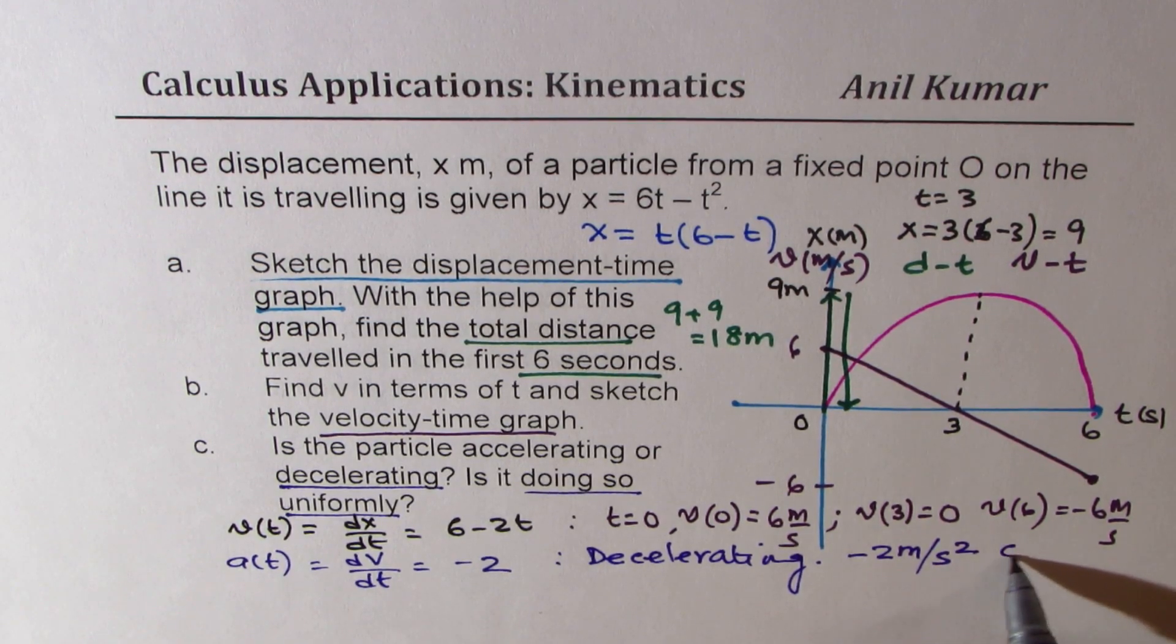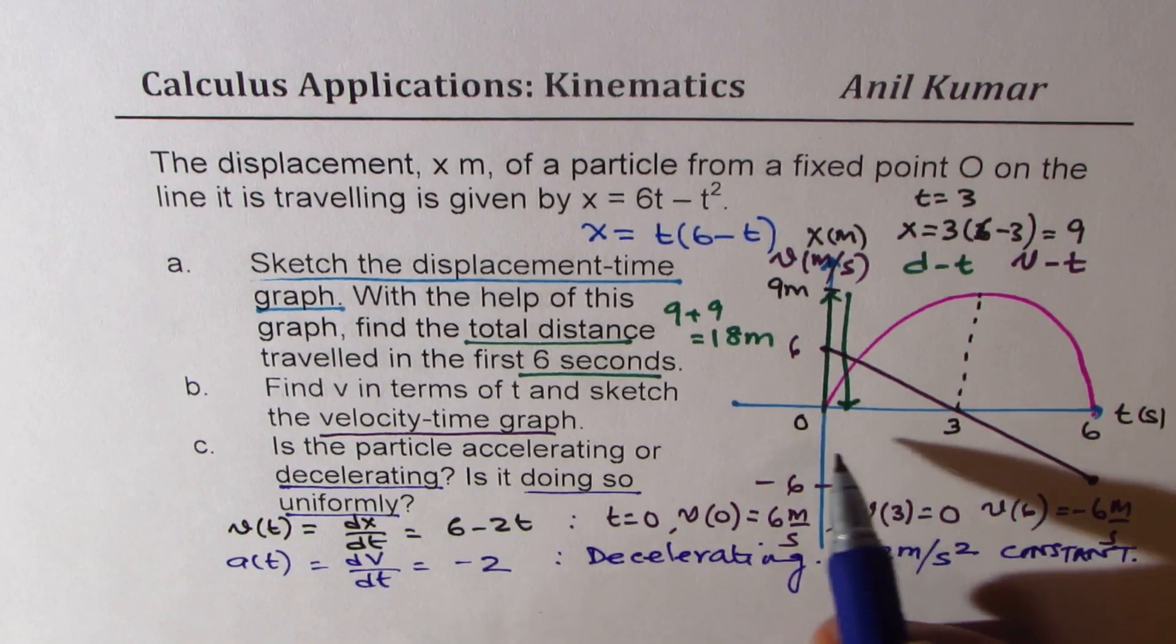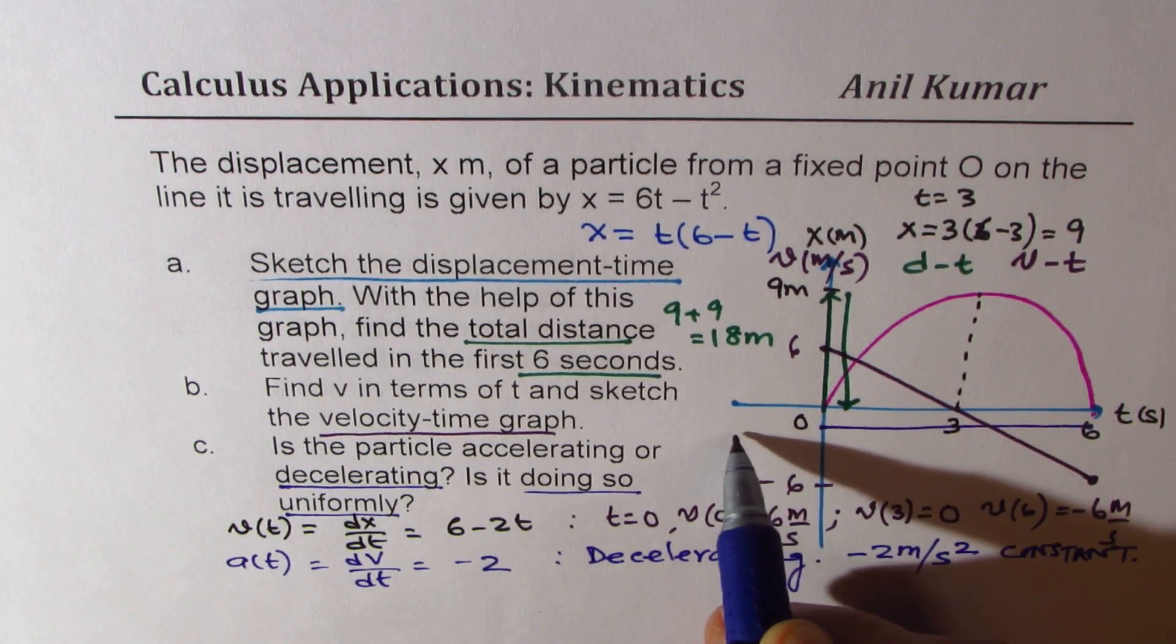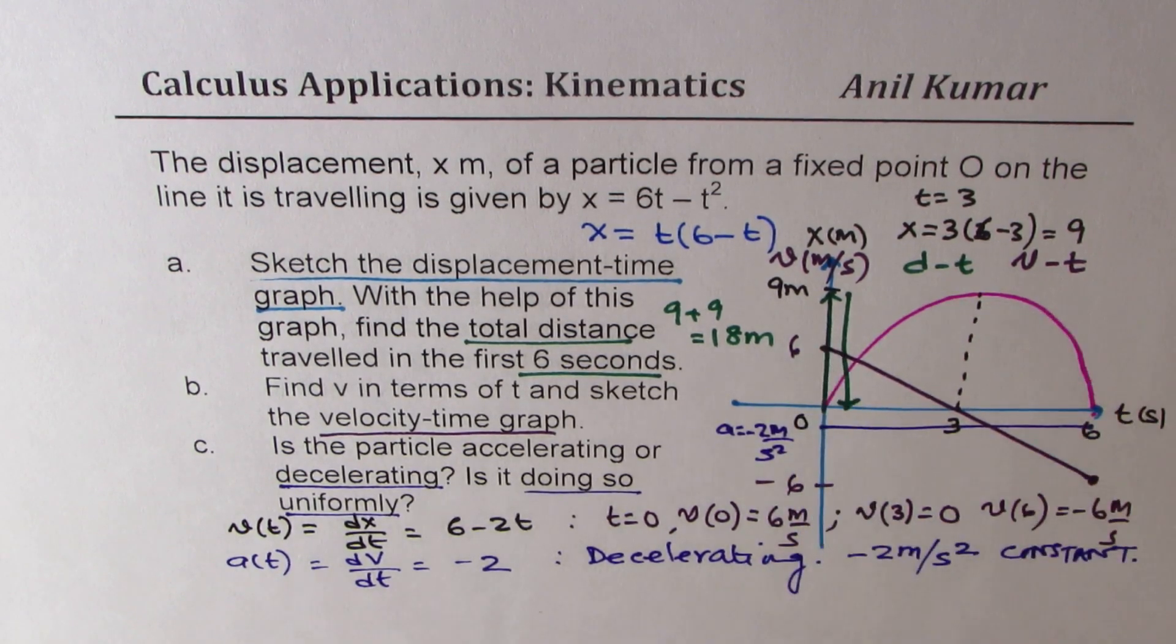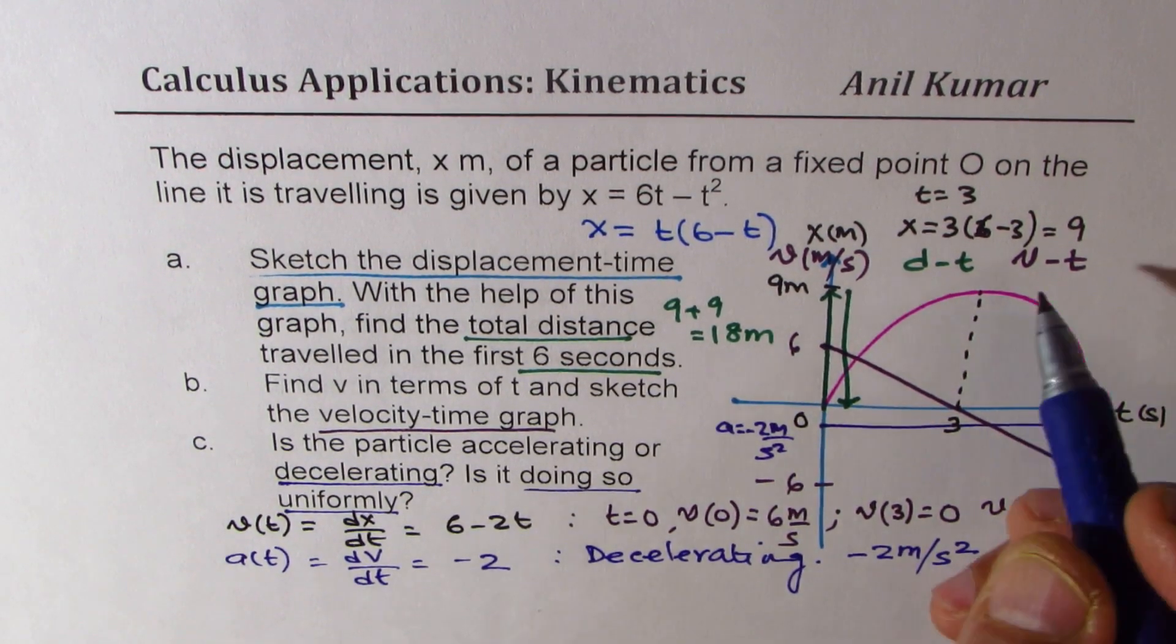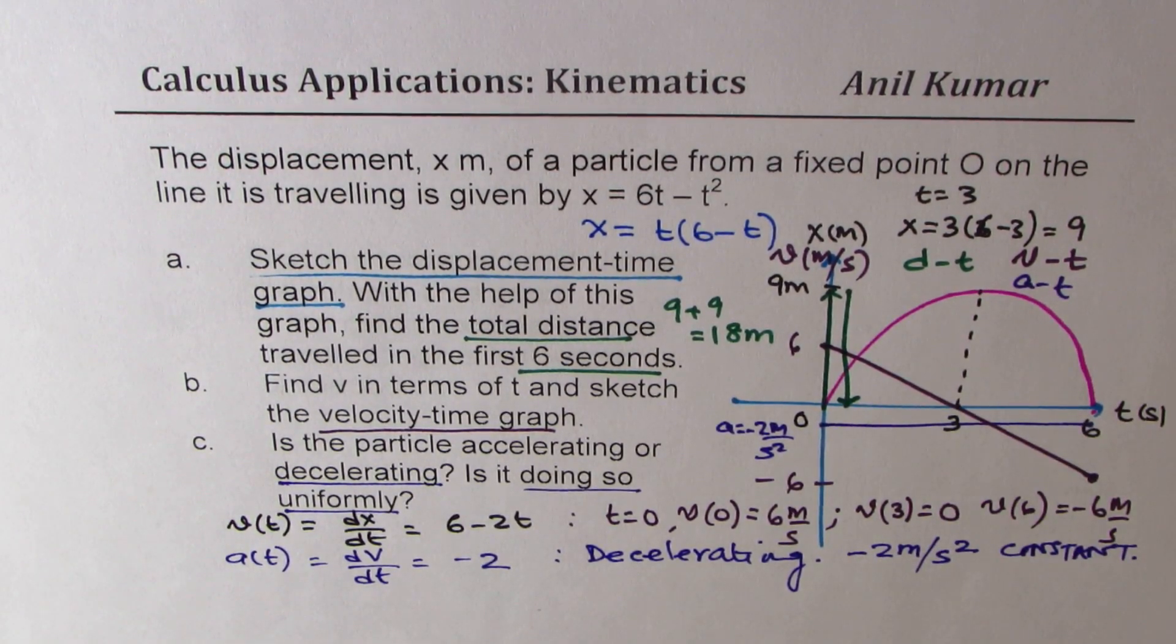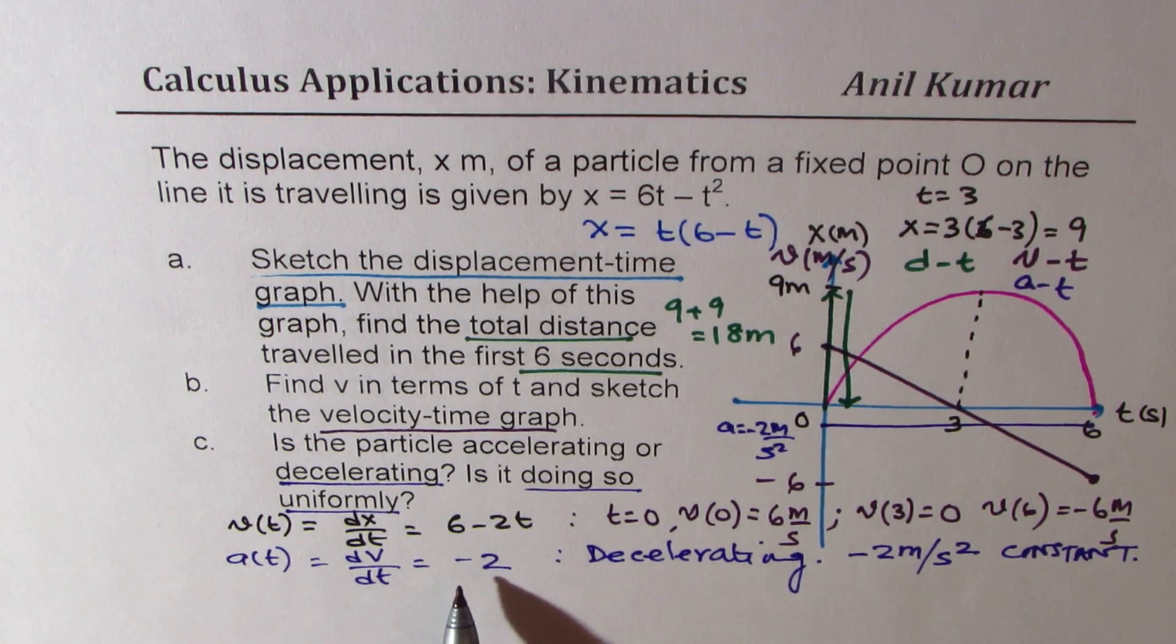So we get our answer, which is decelerating at the rate of minus 2 meters per second squared. So that means it is also constant. So if I have to sketch on the same graph, it could be a line at a equals minus 2 meters per second squared. So the y-axis I have used for velocity and acceleration also along with displacement. So the units are different, the scale will be different for y-axis, but that is how you could show it on the same axis. So acceleration is always negative as shown here.